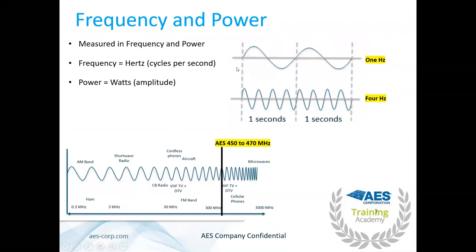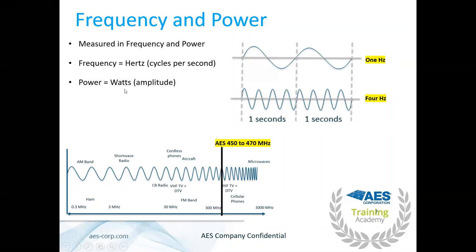Frequency of a radio wave is how often a wave passes a given point per second — one hertz is one pass per second. We're in the 450 to 470 megahertz range, which is not too high a frequency in the grand scheme of things. We exist right alongside cell phones and direct TV. Power in watts is how high and how low the waves go — the peak and trough determine the power, or amplitude.